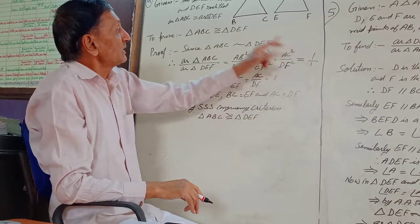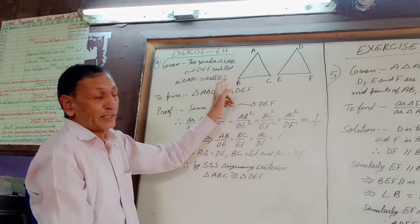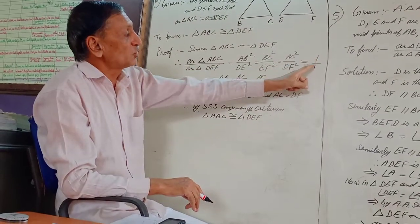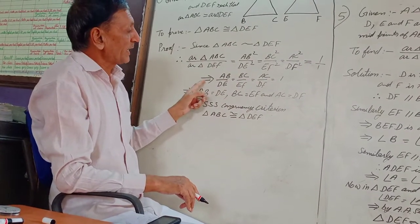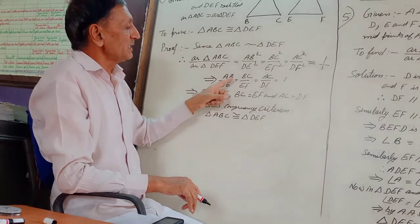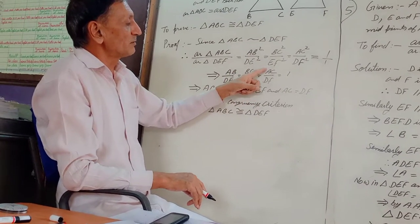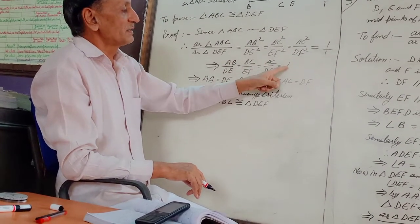Why 1? Because they are equal in area. Therefore, this becomes equal to 1. This means we can also write that AB upon DE is equal to BC upon EF is equal to AC upon DF is equal to 1.